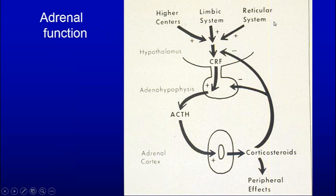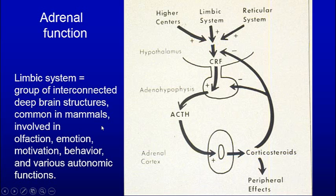Here we see the higher brain centers, which act on the hypothalamus, which affects the pituitary to cause ACTH to stimulate the cortex. Cortisol has peripheral effects and also feeds back on these different layers. Even the limbic system — deep brain structures common in mammals and involved in smelling, emotion, motivation, and behavior — influences ACTH through its influence on the hypothalamus and the pituitary.